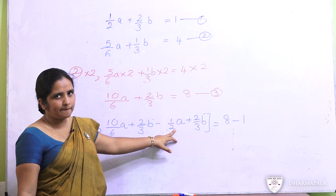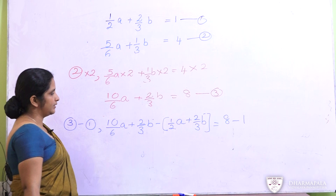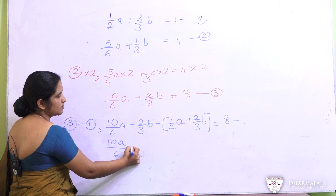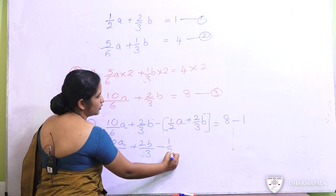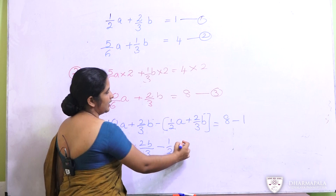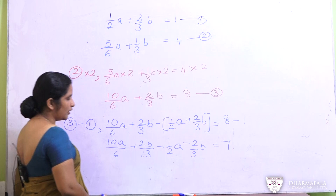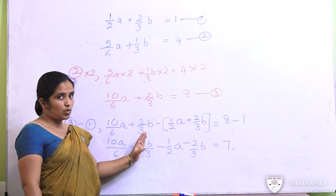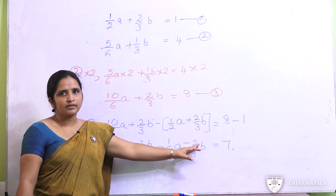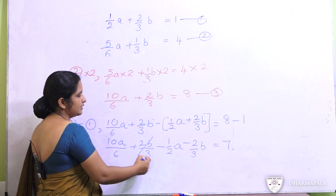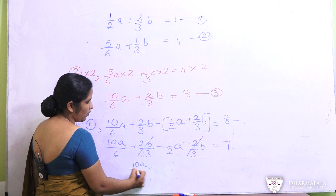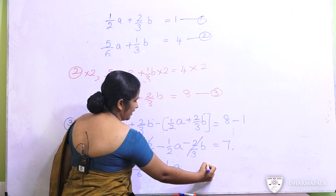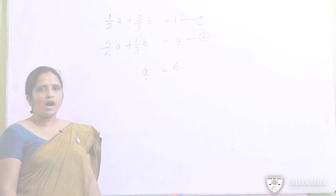When simplifying: ten sixths a plus two thirds b, minus one half a minus two thirds b, equals 7. You can see that plus two thirds b and minus two thirds b cancel each other. So you are left with ten sixths a minus one half a equals 7. It is easy to simplify these two a terms, and after simplifying you get the answer for a as 6.